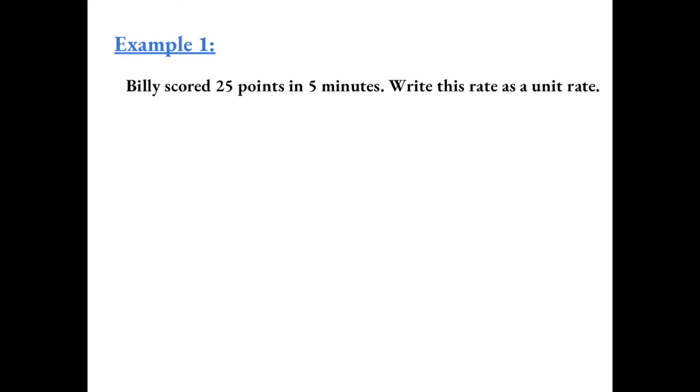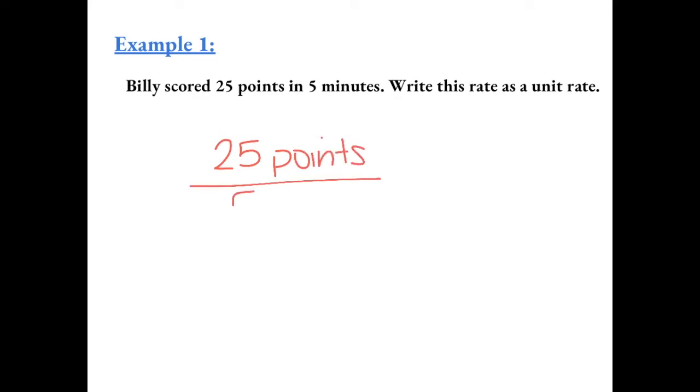Example 1: Billy scored 25 points in 5 minutes. Write this rate as a unit rate. So we want to first write it as a fraction — 25 points in 5 minutes.